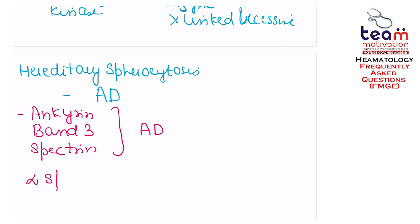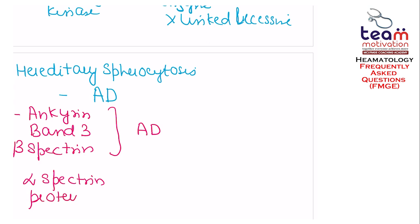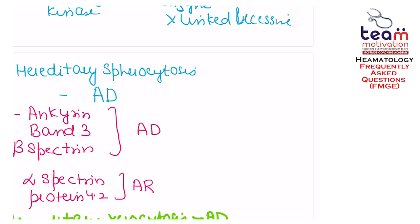Alpha-spectrin deficiency and protein 4.2 deficiency are autosomal recessive. So if the question asks about hereditary spherocytosis in general, answer autosomal dominant. If they specifically ask about the autosomal recessive pattern, the answer is alpha-spectrin deficiency and protein 4.2 deficiency.